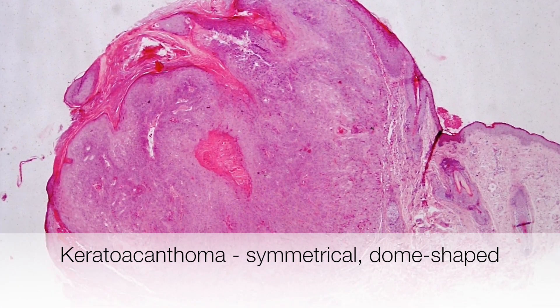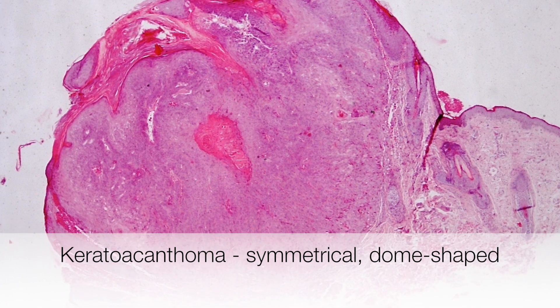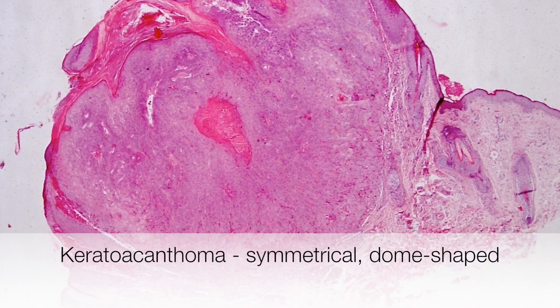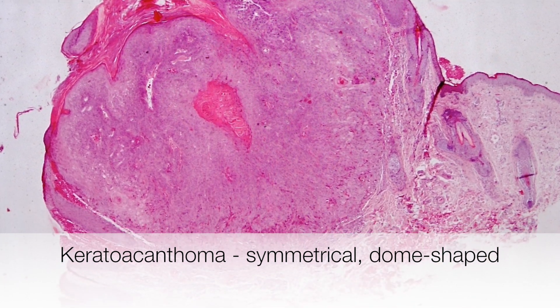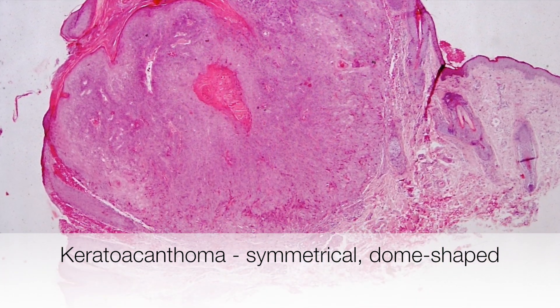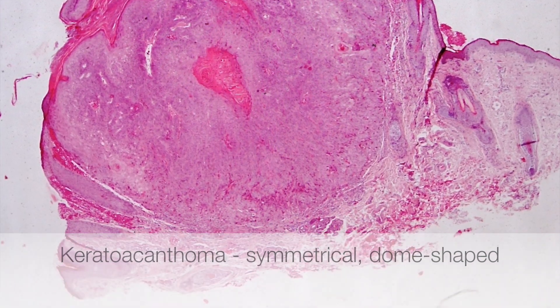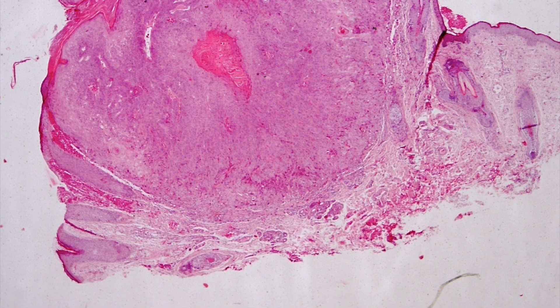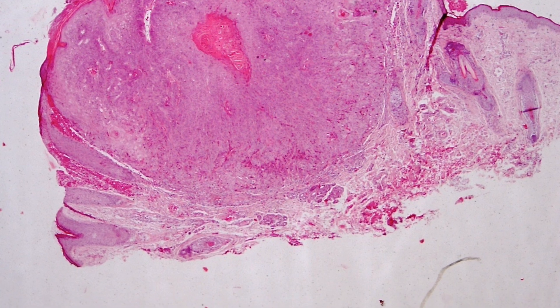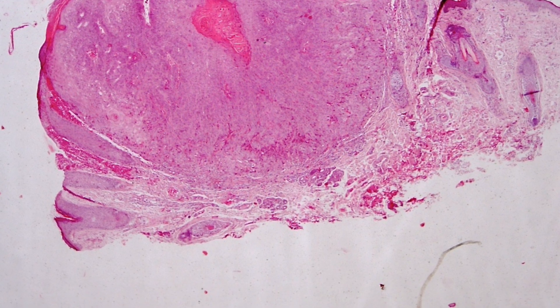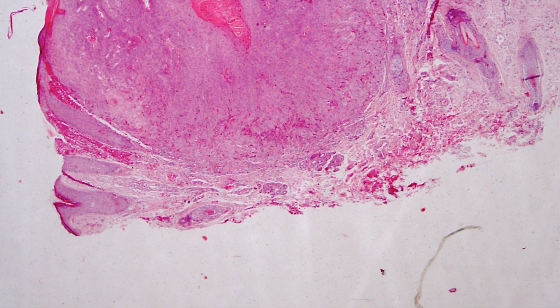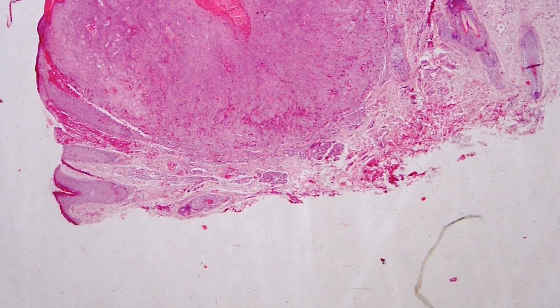This is a low-power view of a typical keratoacanthoma. It is symmetrical and dome-shaped, and has both exophytic and endophytic growth patterns.